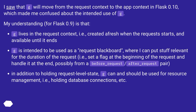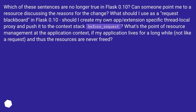In addition to holding request-level state, g can and should be used for resource management, such as holding database connections. Which of these things are no longer true in Flask 0.10? Can someone point me to a resource discussing the reasons for the change? What should I use as a request blackboard in Flask 0.10 — should I create my own app/extension-specific thread local proxy and push it to the context stack before_request?